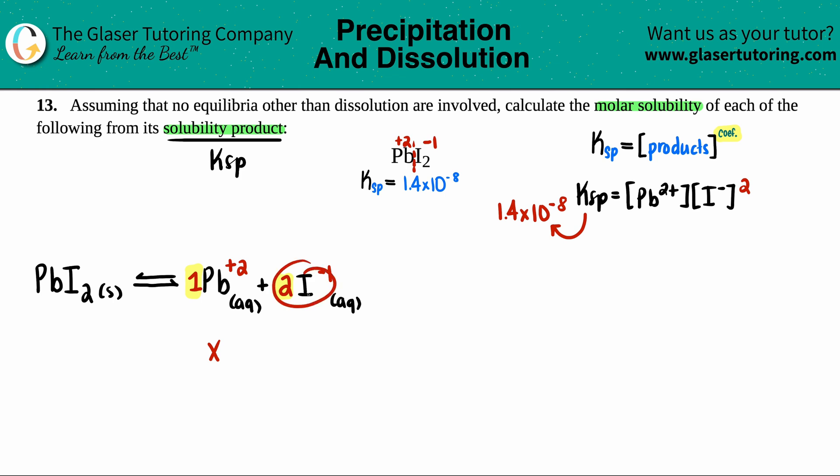But for the I-, it's a one to two ratio. So if you label the Pb2+ as an X concentration, this would have to be two times more. So it'd be 2X. It makes sense because you just dropped that two in front of your variable. So now I have X and 2X that are going to go into this equation. The Pb2+ is X and the I- is now 2X.